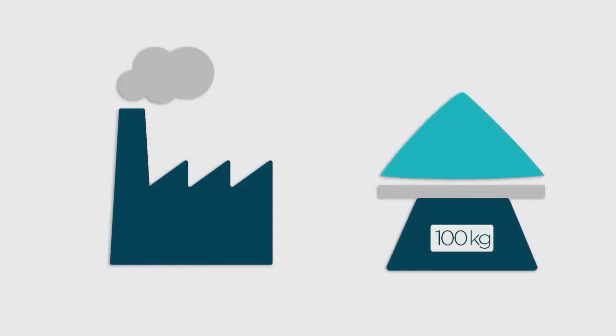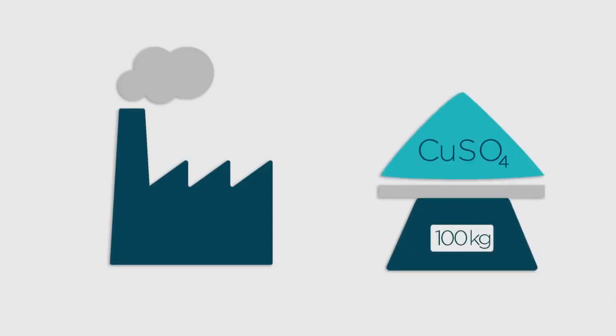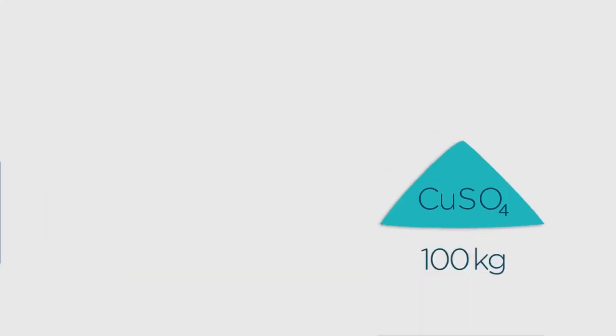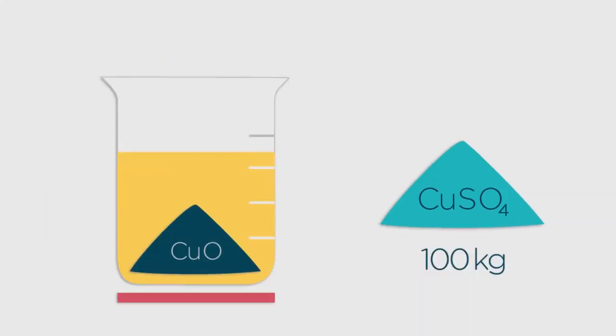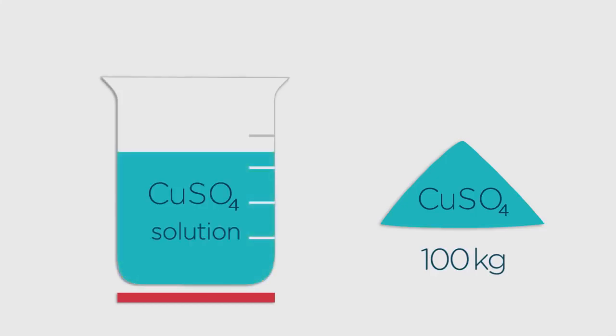One of your customers has ordered 100 kilograms of copper sulfate crystals. To deliver this, you need to dissolve copper oxide in hot sulfuric acid. This will produce copper sulfate solution from which we can get the blue hydrated copper sulfate crystals that you might be familiar with.